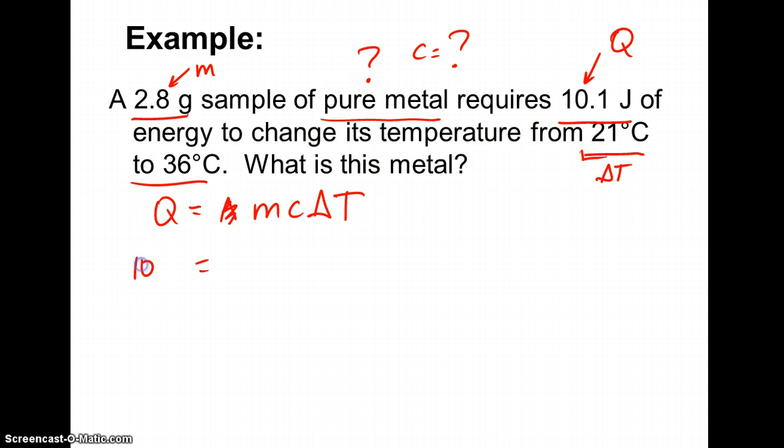So I plug it in. I have 10.1 joules of some substance required to heat my sample, that was 2.8 grams. C is my unknown, so I leave it as c. And then I do a change in temperatures, 36 minus 21. And clearly you can do that in your head as well. So I'll rewrite it. It looks like we have a 15 degree difference in temperature. So if I do the actual calculation for this one here, it's going to require a little bit of algebra. It works out that I have my 10.1 joules to be 15 times...